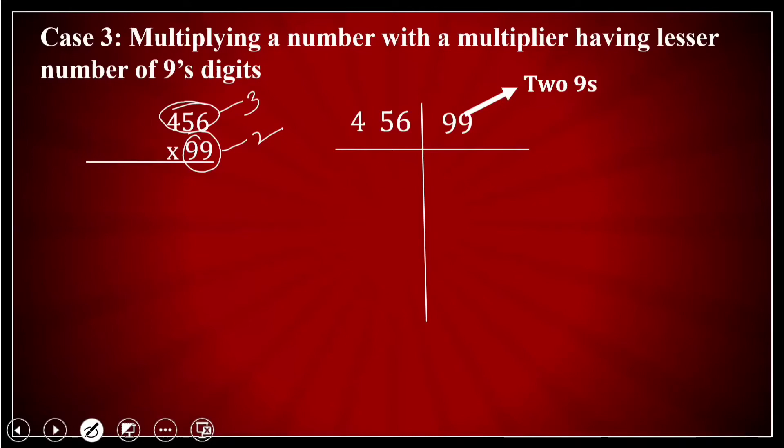Now how many nines are there? There are two nines. So two nines here means I need to focus on the two digits here. These two digits. So I'll just take them separately. And what is left is the digits whatever is left? I'll take that separately.